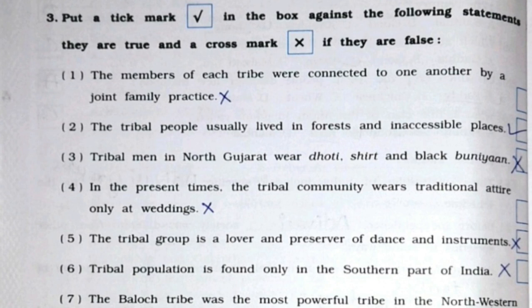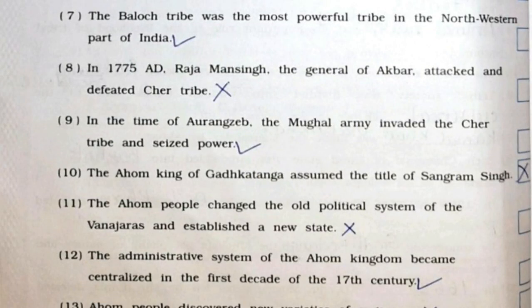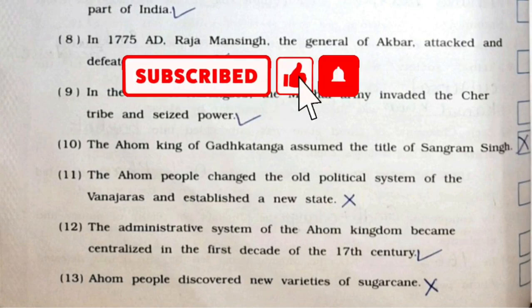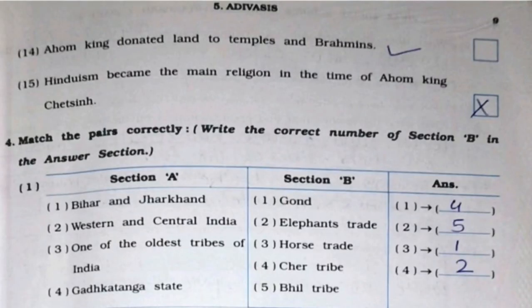Sixth: Tribal population is found only in the southern part of India — it is False. Seventh: The Baloch tribe was the most powerful tribe in the northwestern part of India — it is True. Eighth: In 1775 AD Raja Man Singh, the general of Akbar, attacked and defeated the Chair tribe — it is False. Ninth: In the time of Aurangzeb, the Mughal army invaded the Chair tribe and seized power — it is True. Tenth: The Ahom king of Gadkataanga assumed the title of Sangram Shah — it is False. Eleventh: The Ahom people changed the old political system of the Bhuiya rajas and established a new state — it is False. Twelfth: The administrative system of the Ahom kingdom became centralized in the first decade of the 17th century — it is True. Thirteenth: Ahom people discovered new varieties of sugarcane — it is False. Fourteenth: Ahom king donated land to temples and Brahmins — it is True. Fifteenth: Hinduism became the main religion in the time of Ahom king Chit Singh — it is False.